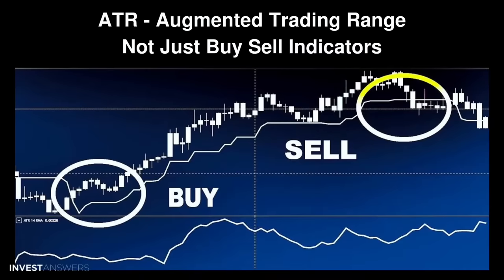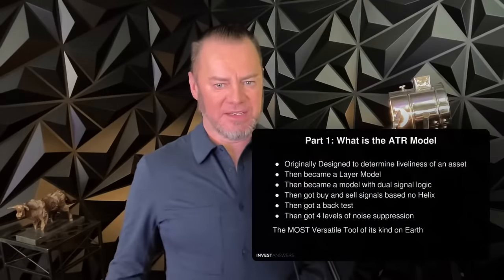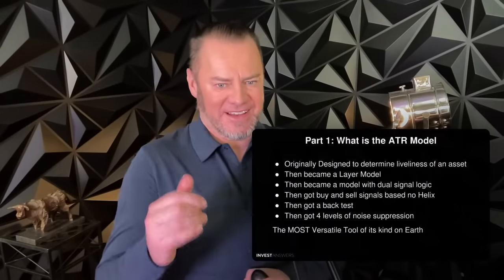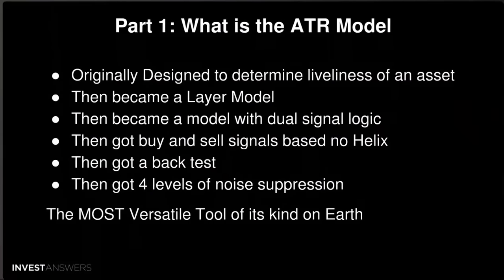The original idea was to work with the development team and build something that would determine the 'liveness' of an asset — specifically for crypto — to determine if something is not going to move off the dead layer. That was the first mission. Second, it became a layer model to identify support and resistance layers.